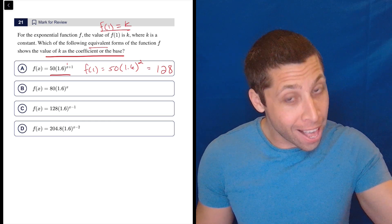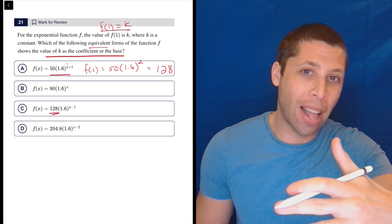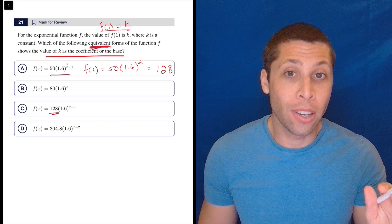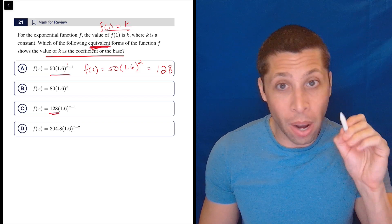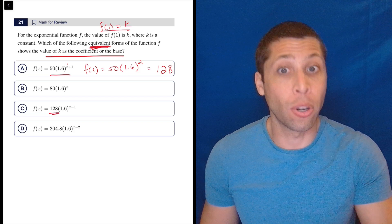Now looking ahead, I do see that choice C has 128. So I already know that that's the answer. And the reason I know that is they told me these are all equivalent. So I know that when I put the number 1 in for x, I'm going to keep getting 128 out.